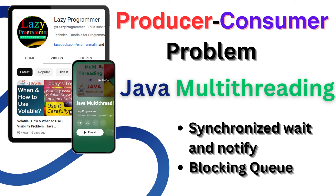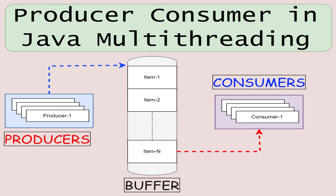The Producer-Consumer problem is a classic synchronization challenge in concurrent programming. It involves two threads that share a common fixed-size buffer. One thread is a producer thread and its job is to generate data and put it into the buffer multiple times.